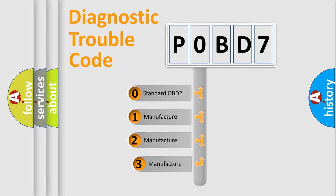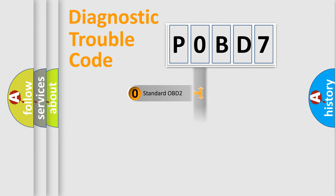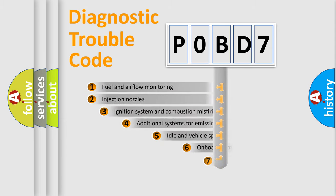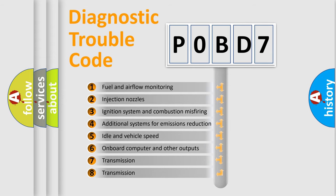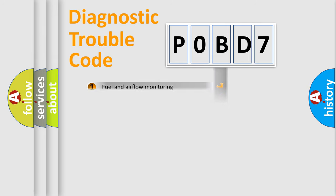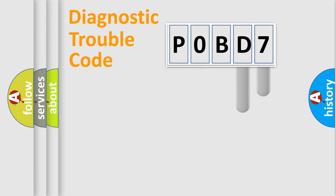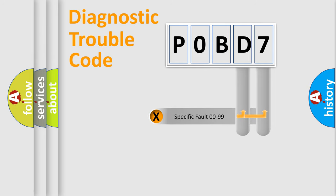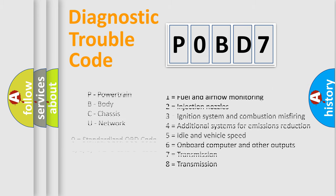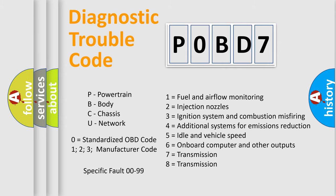If the second character is expressed as zero, it is a standardized error. In the case of numbers 1, 2, or 3, it is a more manufacturer-specific expression of the car's specific error. The third character specifies a subset of errors. This distribution is valid only for the standardized DTC code. Only the last two characters define the specific fault of the group. This division is valid only if the second character code is expressed by the number zero.